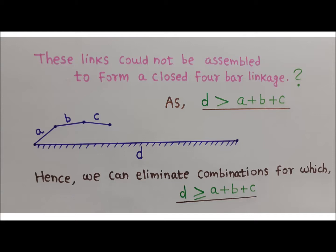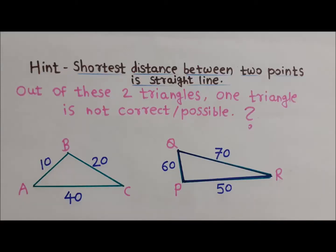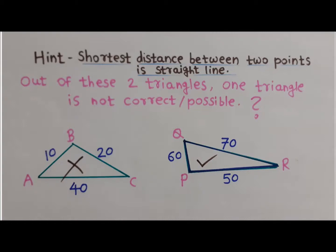Now we will take a slight deviation and discuss triangles. There are two triangles on screen: triangle ABC and triangle PQR. Out of these two, one triangle is not correct or possible. The hint is that the shortest distance between two points is a straight line — and triangle ABC turns out to be not possible.